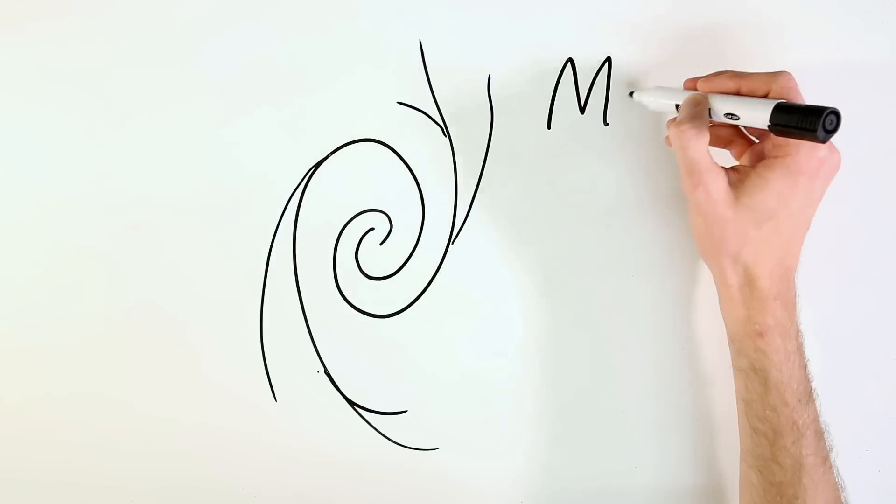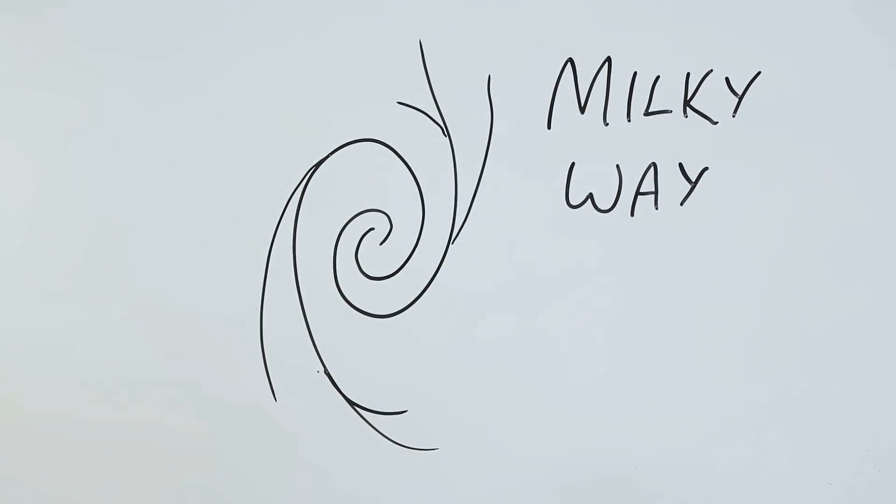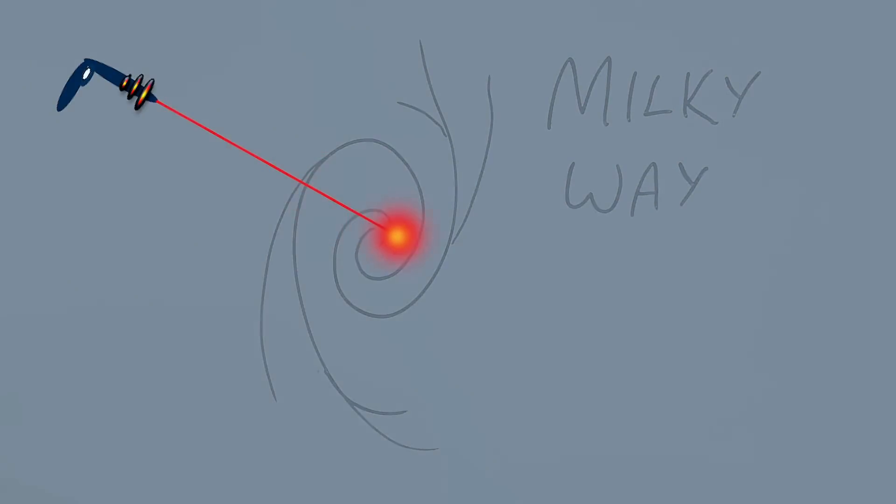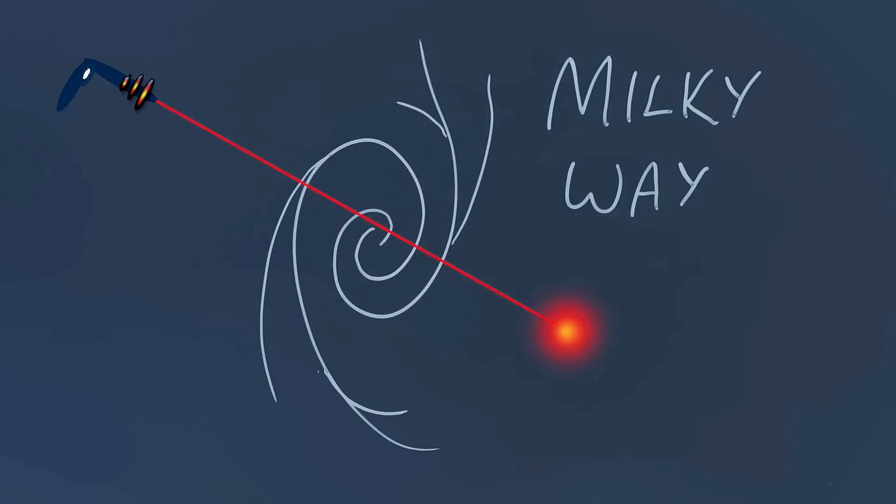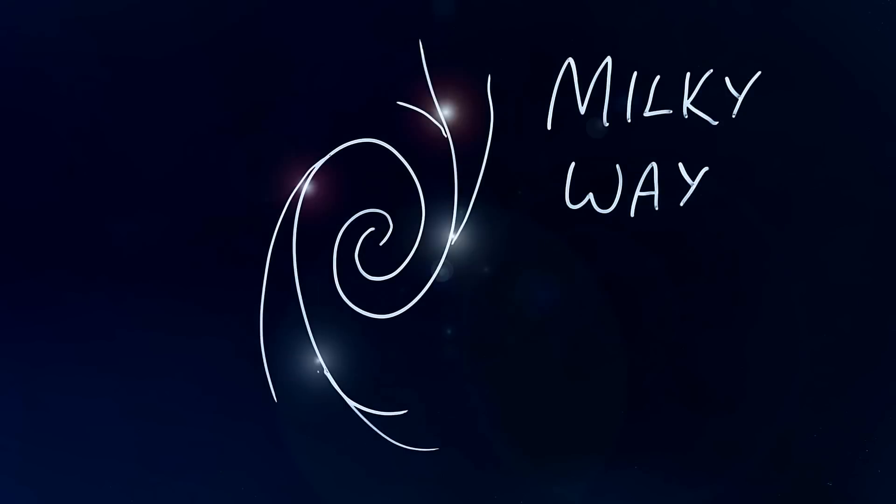Our galaxy is called the Milky Way, and it's so large it would take a laser 100,000 years to travel across it. It's filled with more than 100 billion stars, including all of the ones we can see in the night sky, which is separated by vast expanses of interstellar space.